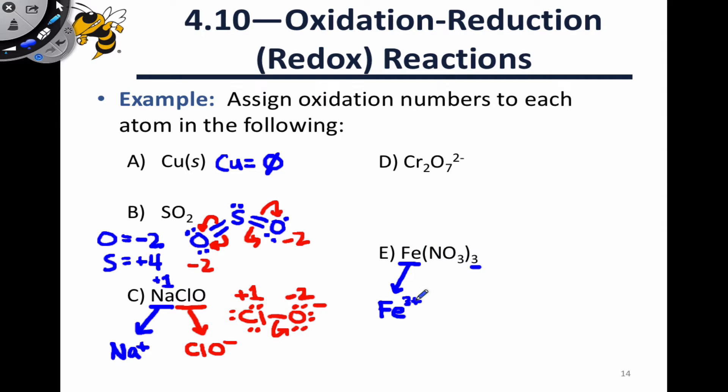That means that since this is a monatomic ion, we can directly conclude that the oxidation number of Fe in this compound is plus three. We can analyze the nitrate separately. We're going to have three identical copies of the nitrate anion in here, so we only need to consider a single ion, as all the nitrogens and oxygens in the other nitrate ions are going to have the same oxidation numbers as these.